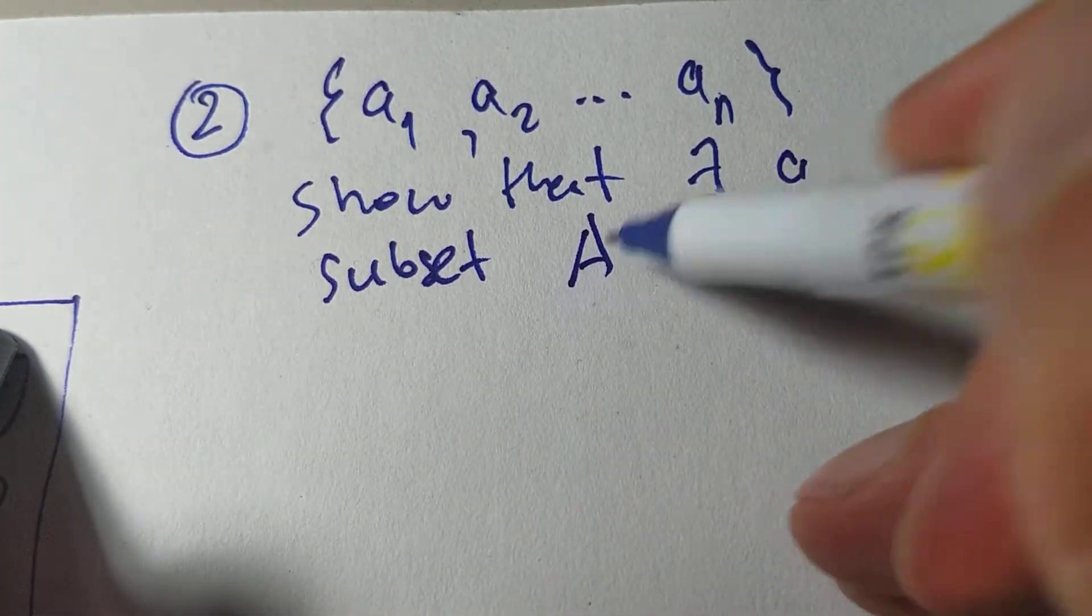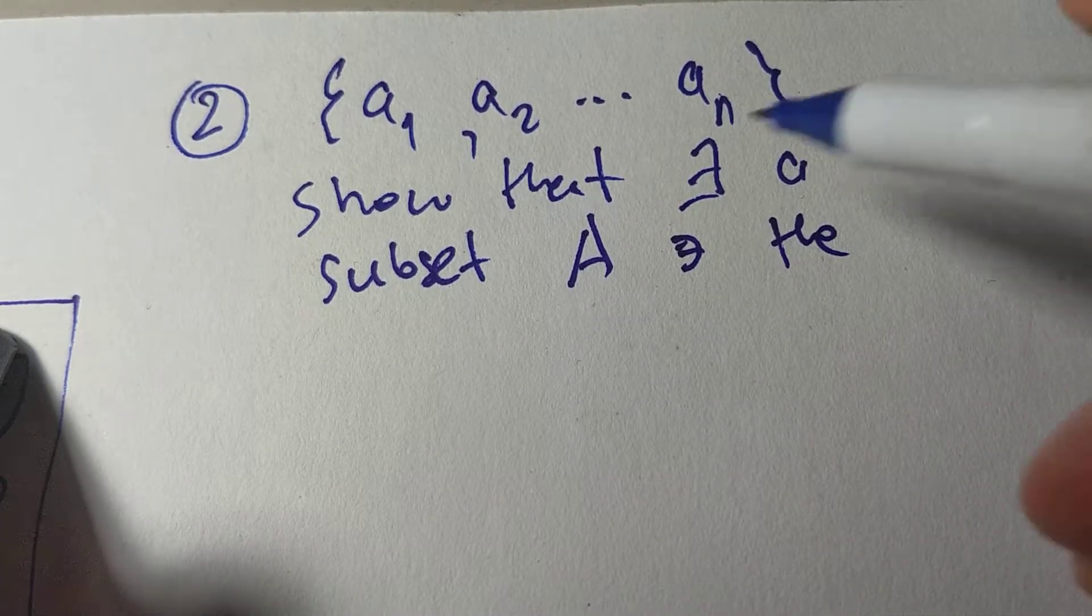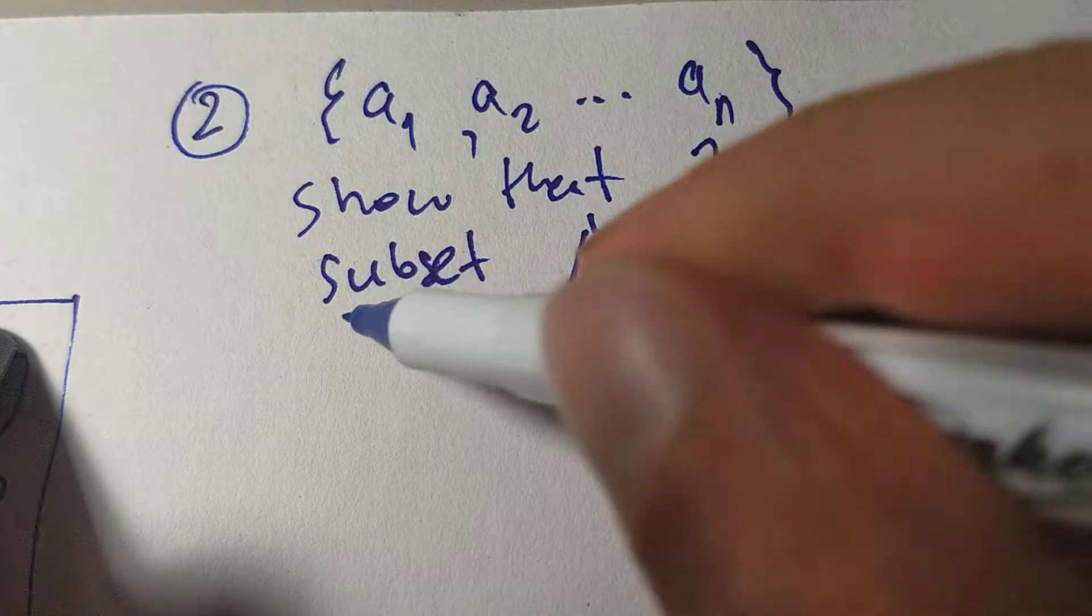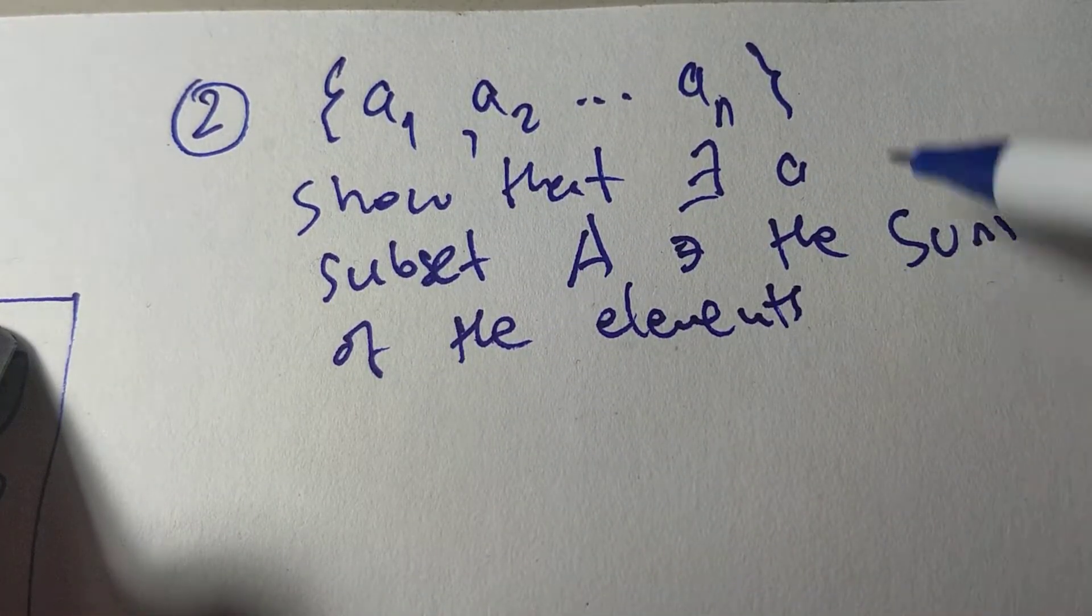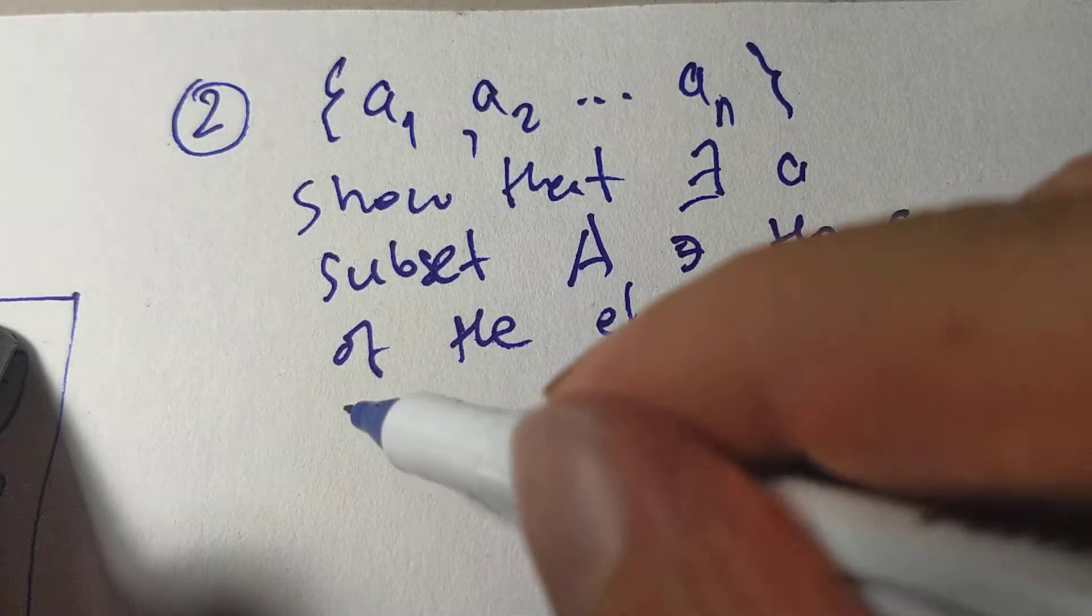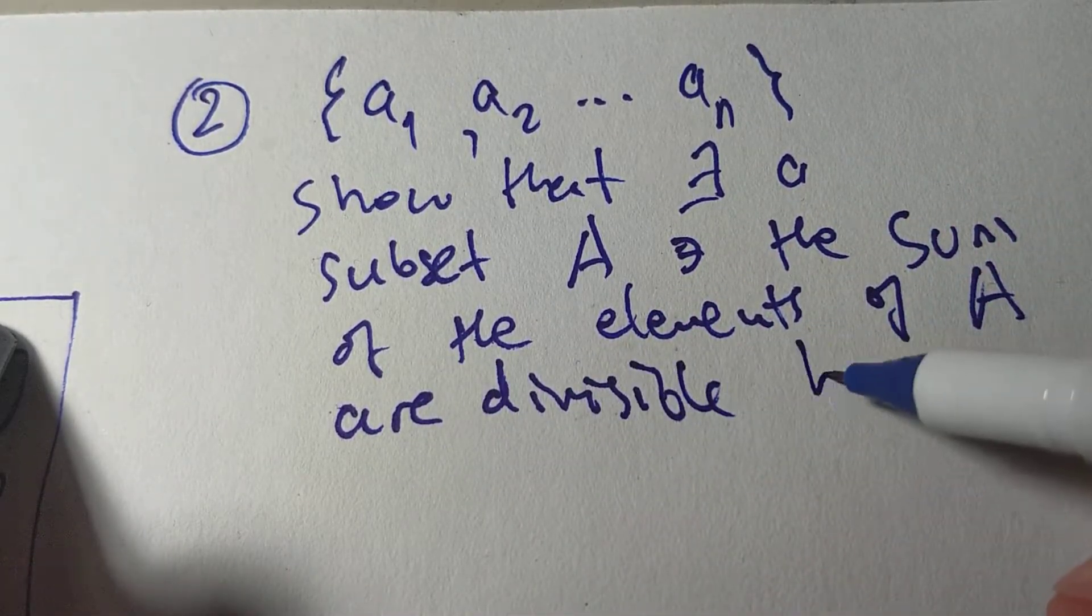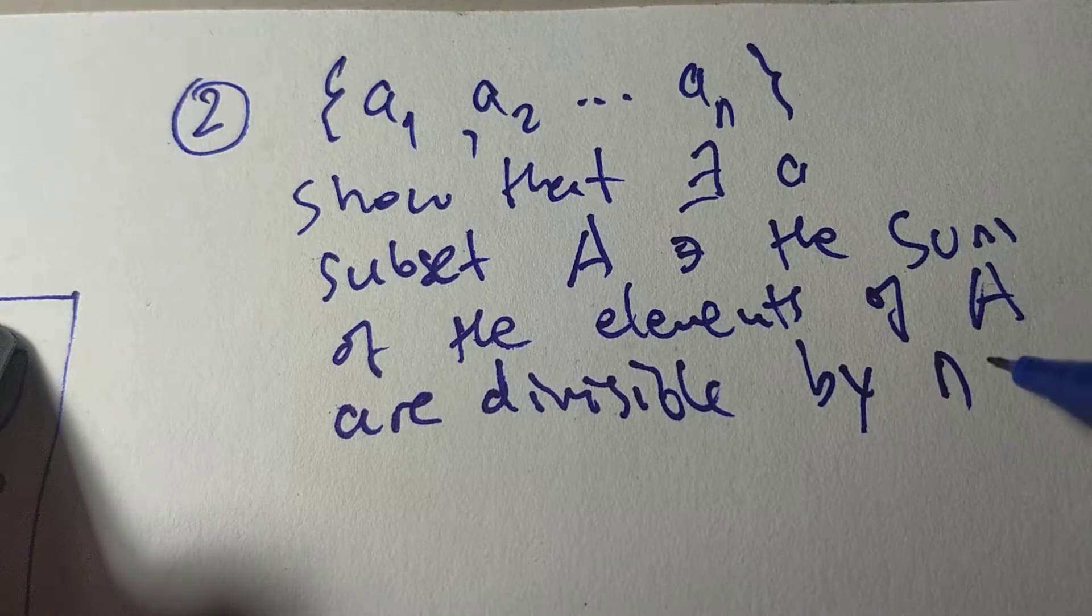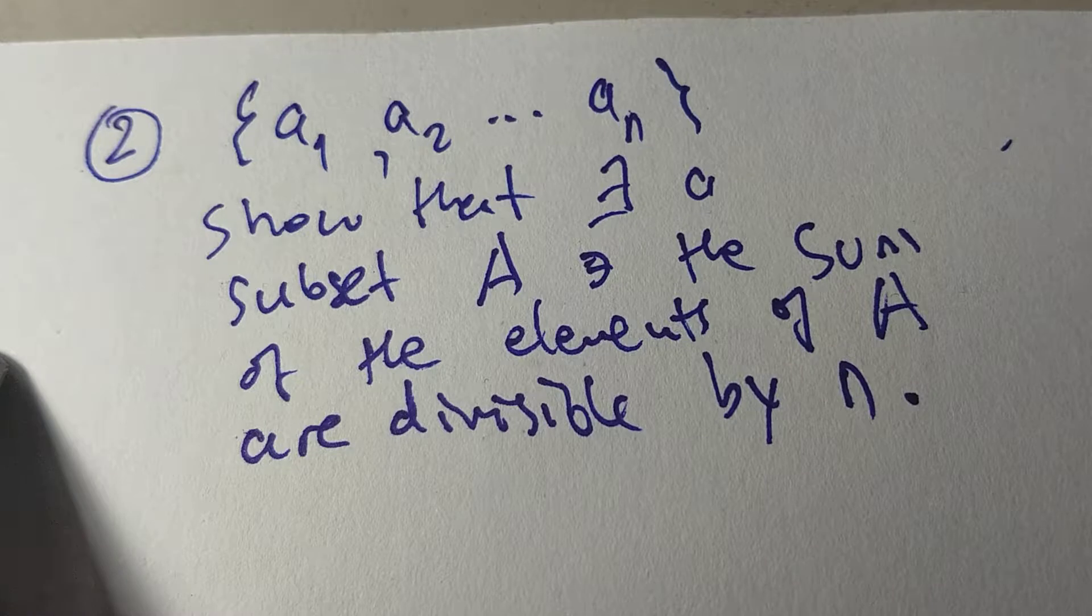Show that there exists a subset, call it A, such that the sum of the elements of A are divisible by N. Now, this is a very interesting problem. Again, it seems impossible to prove.